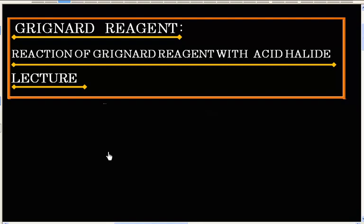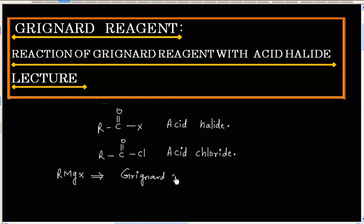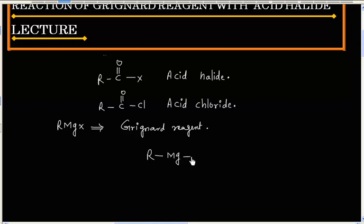In this lecture, we will discuss about reactions of Grignard reagent with Acid Halide. RCOx is the general formula for Acid Halide. For example, RCOCl is Acid Chloride. The general formula for Grignard reagent is RMgX. We can have a typical Grignard reagent RMgCl. In this case, R has a negative charge and magnesium has a positive charge, so R⁻ can act as a nucleophile.